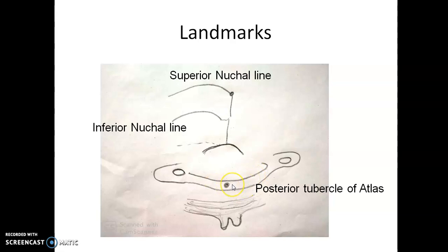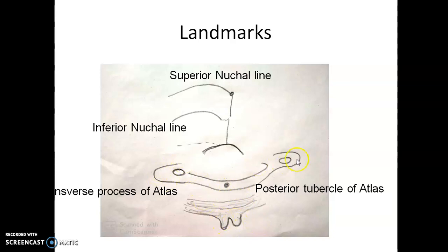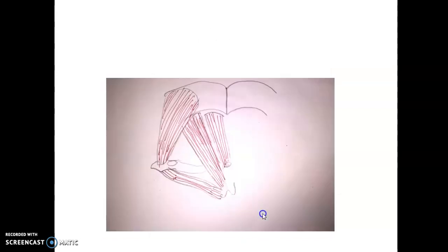The atlas does not have a spine — if the first cervical vertebra had a spine, we would not be able to extend our neck. So it has a posterior tubercle instead. This is the spine of the axis, the second cervical vertebra, and this is the transverse process of the atlas.